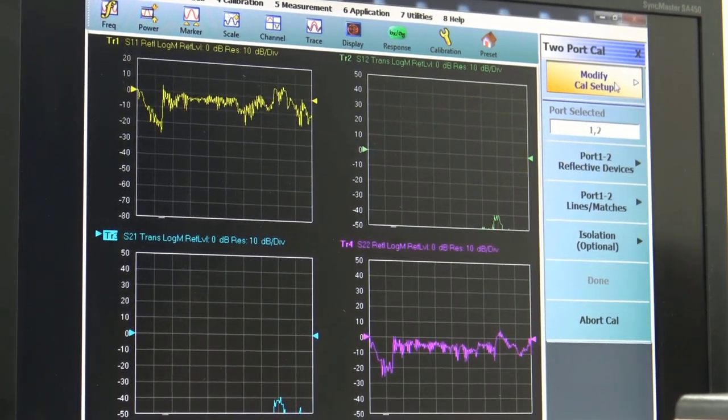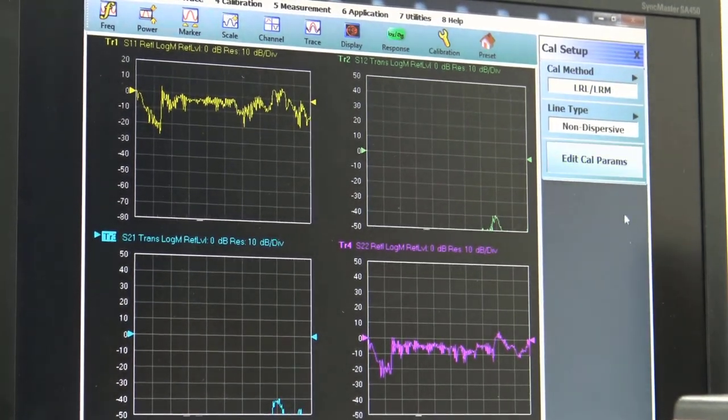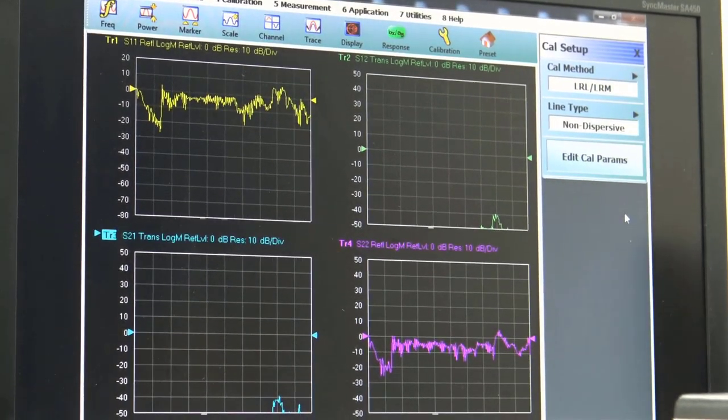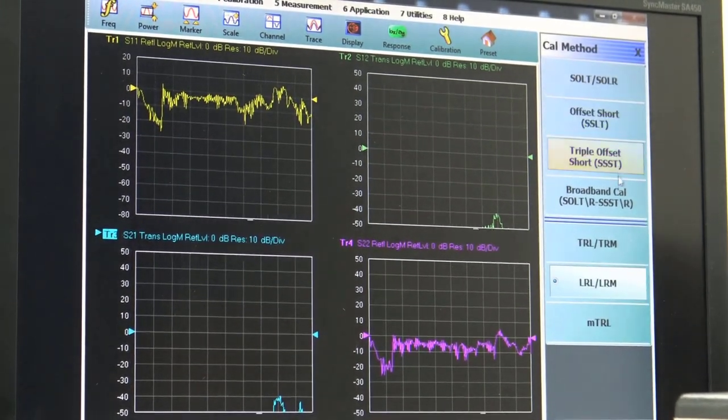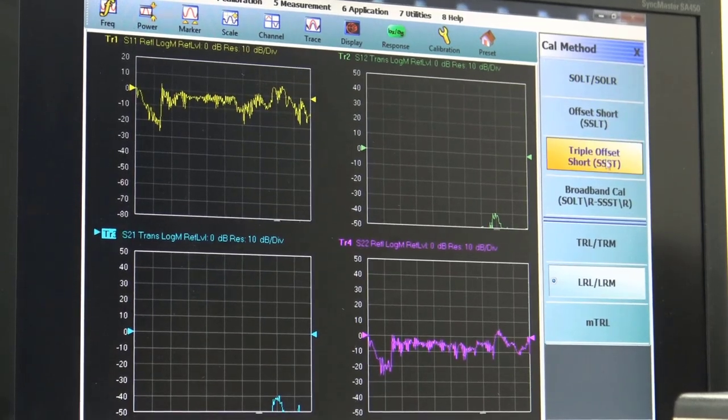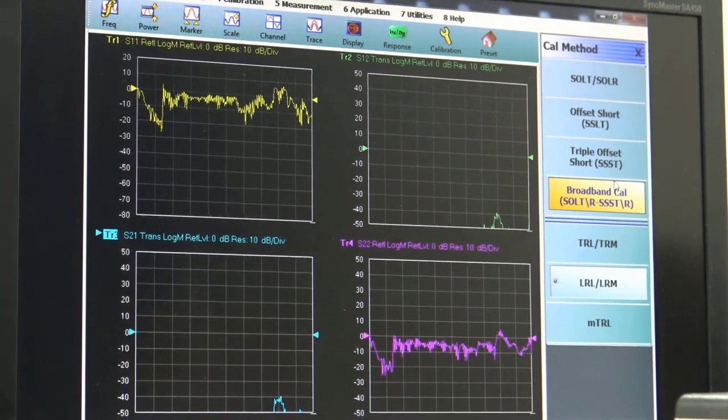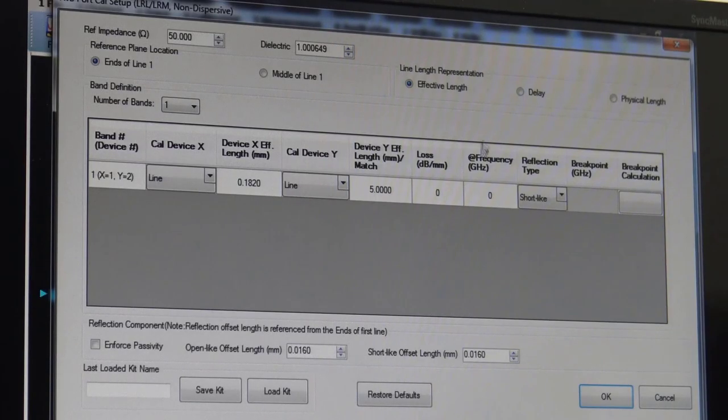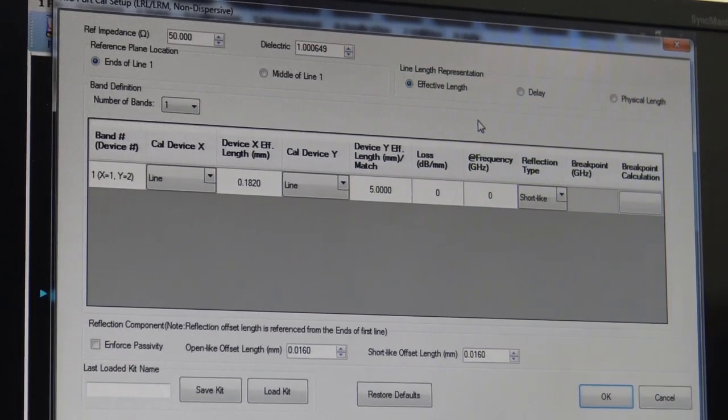We'll go first to modify cal-setup and this is where we define the type of calibration, the algorithm that we're going to be using. If we had a coax set up, then one of these would apply. They would also apply in other situations. So now that we know enough, if we have enough information on our calibration substrate, we can start to enter those parameters into our configuration panel here.